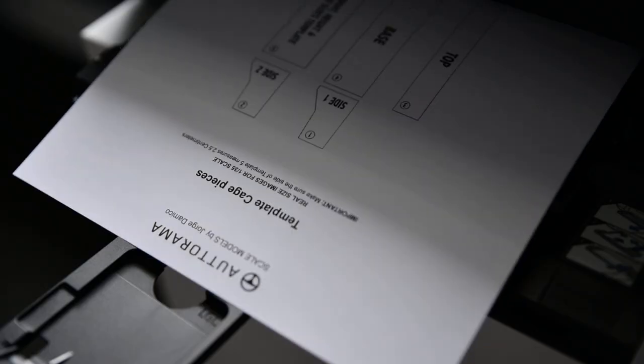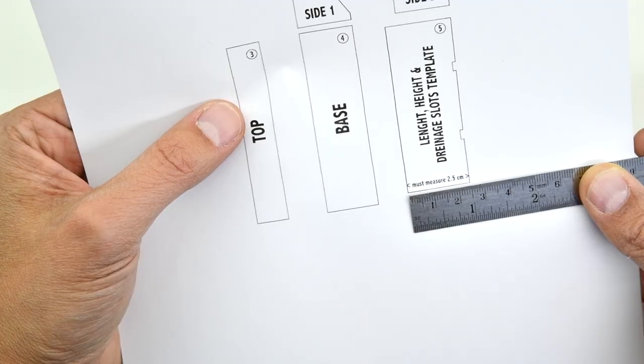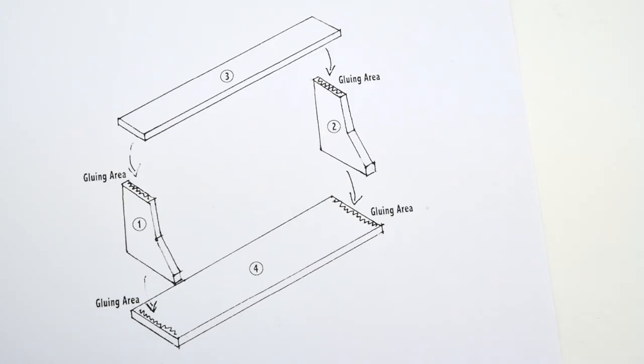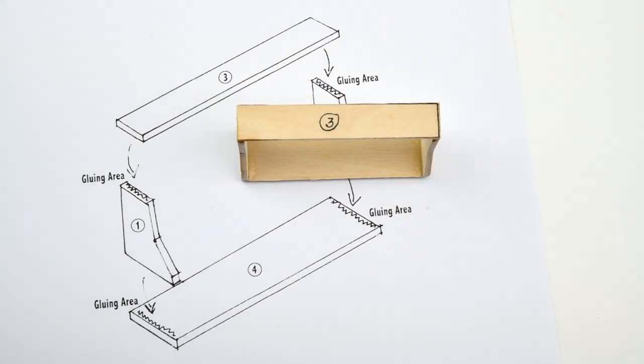We start by printing the template cage pieces. These will be the building blocks for the three-dimensional template we will put together. Make sure the short profile of template piece number 5 measures 2.5 cm. This will guarantee the size of the pieces and the final cage accuracy.